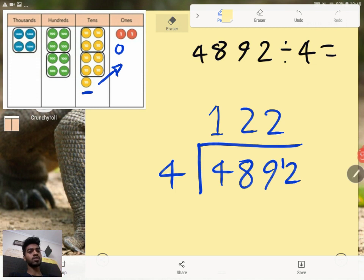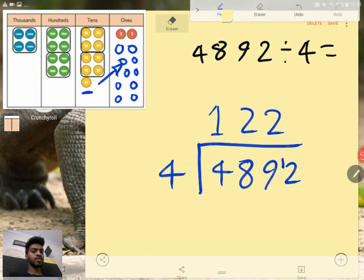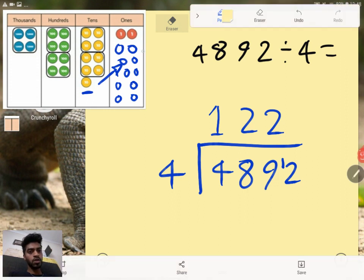So instead of drawing just one you would have to draw 1, 2, 3, 4, 5, 6, 7, 8, 9, 10. Now that gives me a total of twelve in the ones and I have to divide the twelve by four.